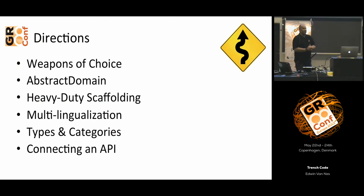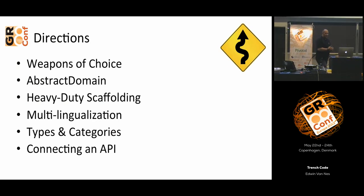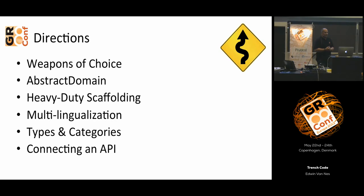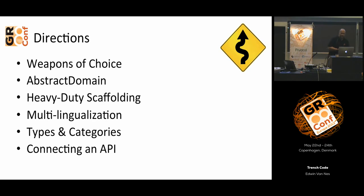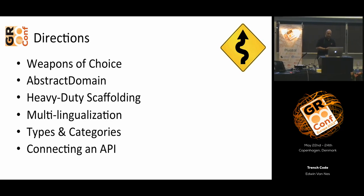The menu is a bit random. I want to introduce a bit of the tools that we use in our daily development. A lot of the design we currently use is based around abstract domain. Something about scaffolding, a design we use, multilingualization — how we make data entered by our clients available in multiple languages. And at the end, if the time is enough, I want to show something about how we connect to an API.